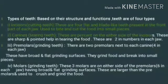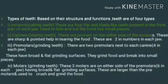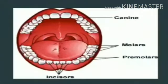What are the types of teeth? Based on structure and function, teeth are of four types. The first is the incisor, the cutting teeth — these are four flat, blade-like teeth present at the front part of each jaw, used to bite and cut food into small pieces. The second is the canine, the tearing teeth — present on either side of the incisors, sharp and pointed, helping in tearing food. Third and fourth are the premolars and molars, used for tearing and grinding food. This is the structure of the different types of teeth: canine, molar, premolar, and incisor.